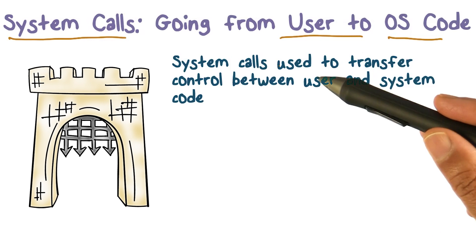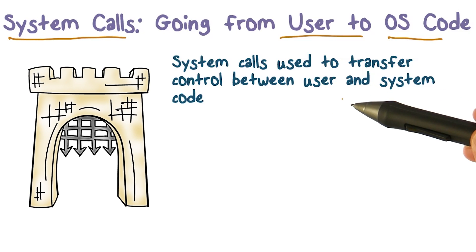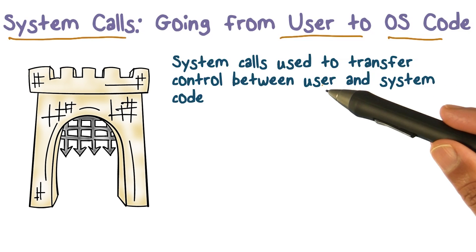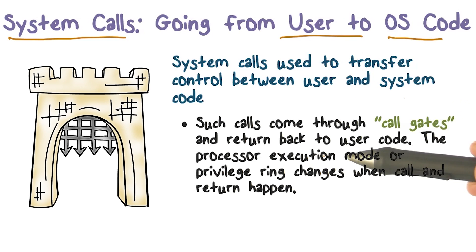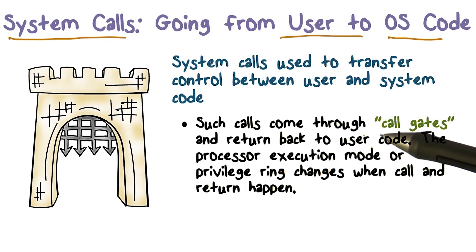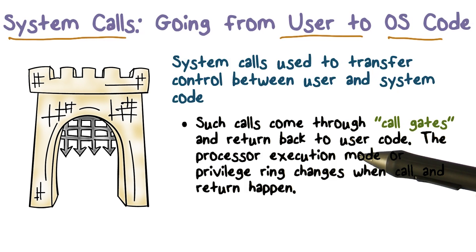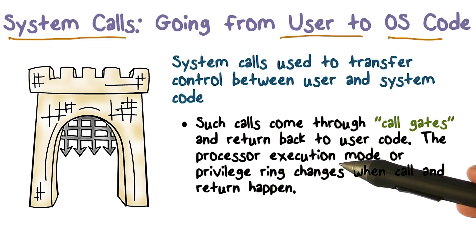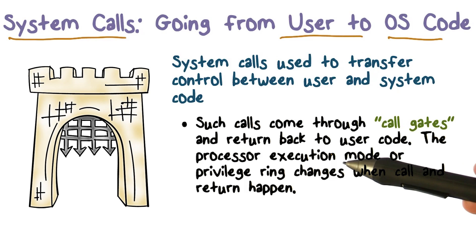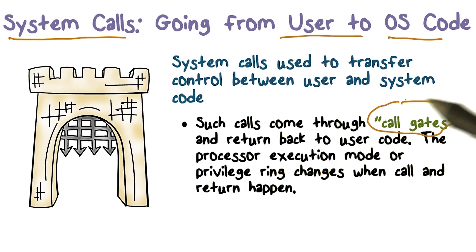System calls are used to transfer control between user and system code — execution that must happen in user mode and system mode. The interesting thing about these calls is that they cannot be arbitrary. These are a set of calls that user level code is allowed to make, defined by the application programming interface or the API that your operating system provides. These calls have to come into the operating system in a controlled fashion.